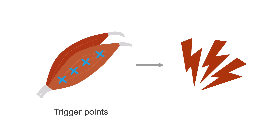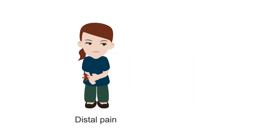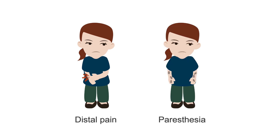Trigger points are discrete regions of a muscle that are firm to touch and produce discomfort when pressure is exerted on them. There is frequently a distal sensory sign associated with the trigger point when it is stimulated. Sometimes when active, it may provoke some distal symptom of pain or paresthesia. Look for tightness of the muscle with pain on palpation and paresthesia in a region associated with that trigger point.